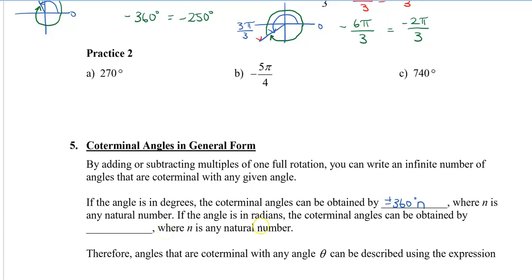If the angle is in radians, the coterminal angle can be obtained by adding 2π this time for every full rotation that we do. And again, we also have times n, because we can have 2π, we can rotate 2·2π's, or 3·2π's, or 4·2π's, and so on.